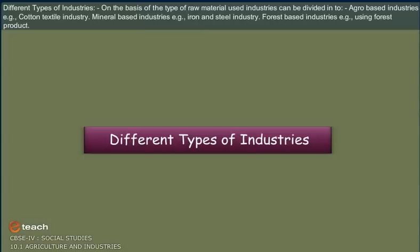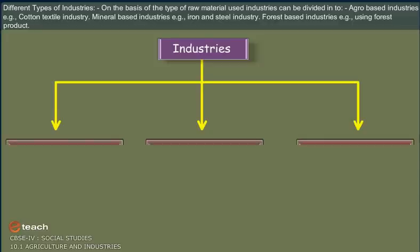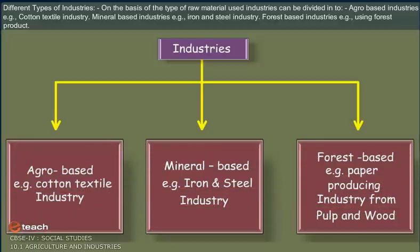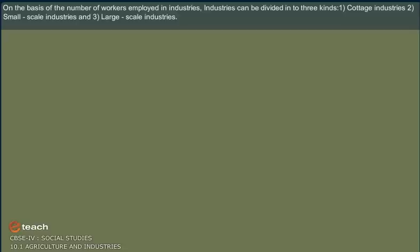On the basis of the type of raw material used, industries can be divided into: agro-based industries (for example, cotton textile industry), mineral-based industries (for example, iron and steel industry), and forest-based industries (for example, industries using forest products).